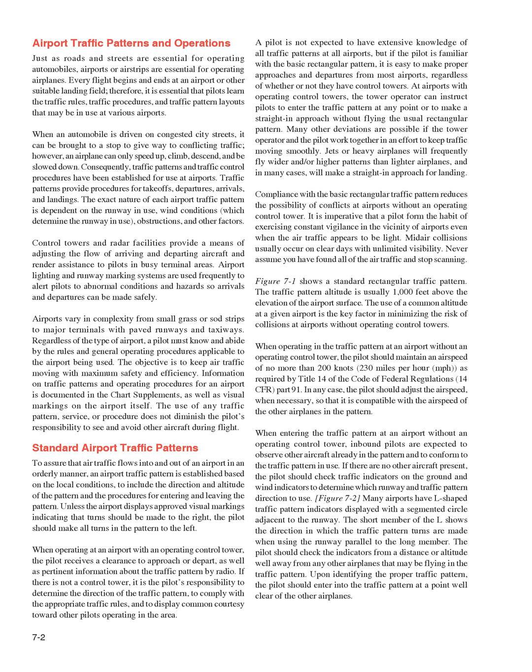The exact nature of each airport traffic pattern is dependent on the runway in use, wind conditions which determine the runway in use, obstructions, and other factors. Control towers and radar facilities provide a means of adjusting the flow of arriving and departing aircraft and render assistance to pilots in busy terminal areas. Airport lighting and runway marking systems are used frequently to alert pilots to abnormal conditions and hazards so arrivals and departures can be made safely.